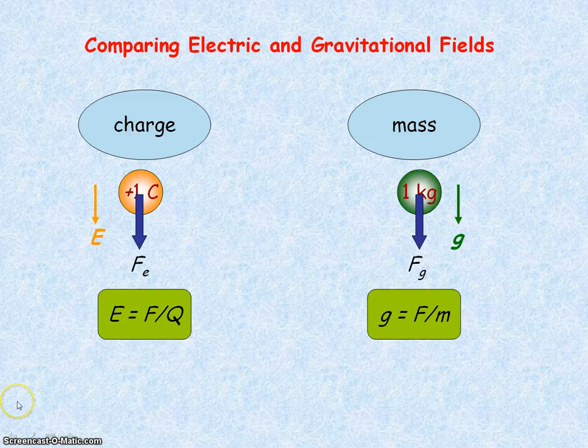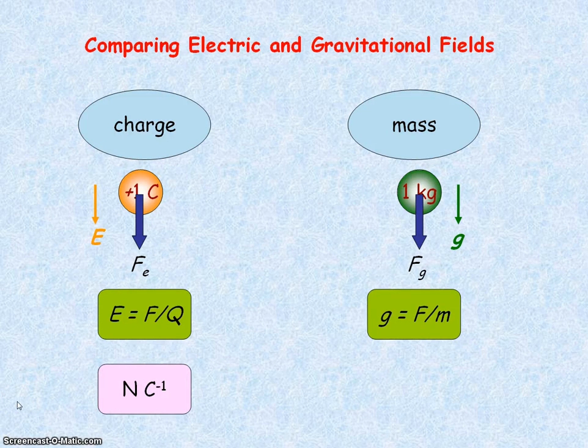The units of electric field strength are newtons per coulomb, whereas the units for gravitational field strength are newtons per kilogram.